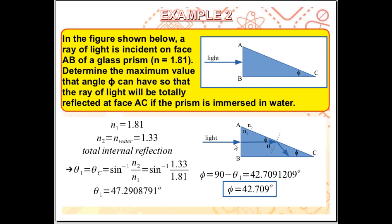Looking at the geometry of the figure, phi and theta 1 together satisfy phi plus theta 1 equals 90 degrees. Therefore phi equals 90 minus theta 1, and knowing theta 1 we can calculate the maximum angle phi to be 42.709 degrees.